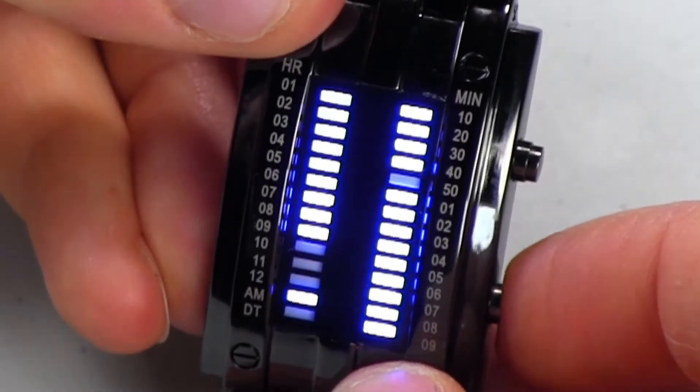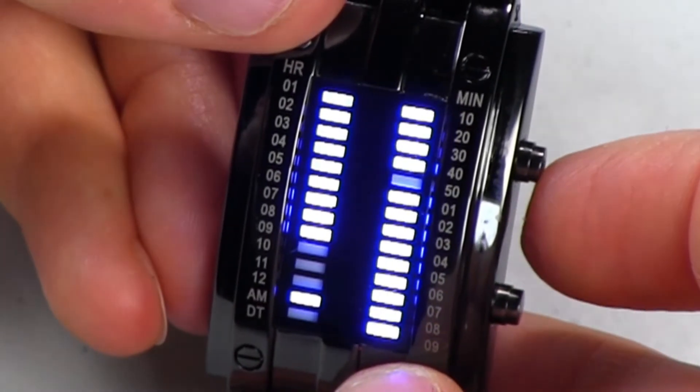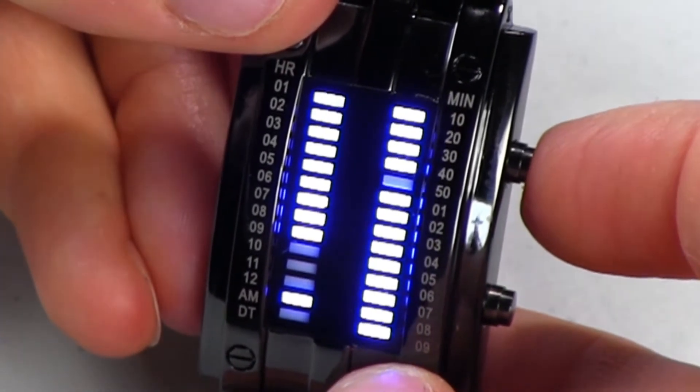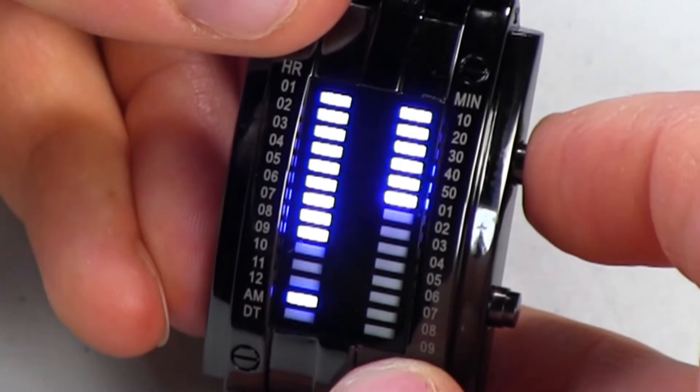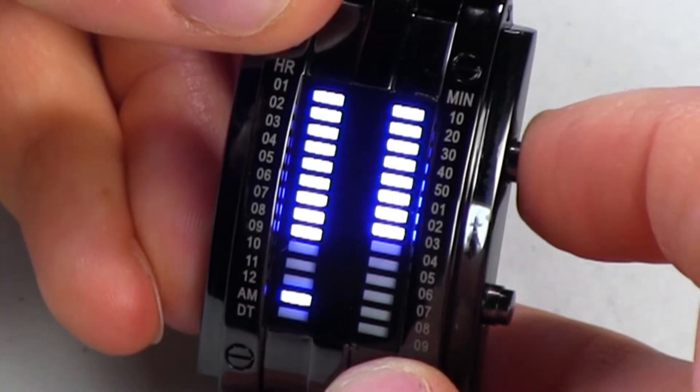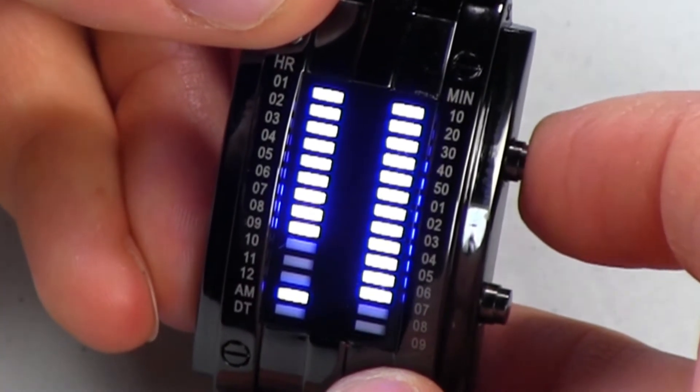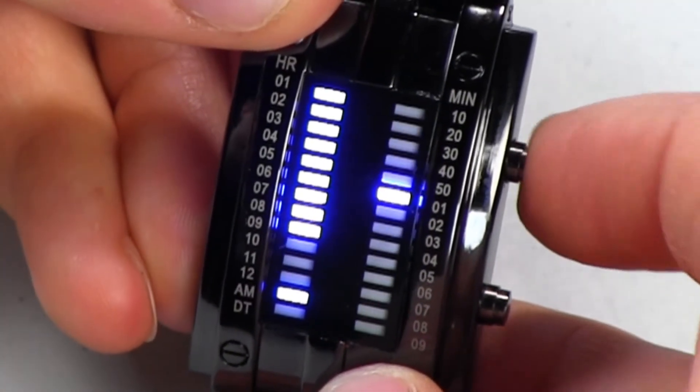So I'm going to hit the bottom button again to shift the blinking to the right side, which means now I'm adjusting the minute. So right now it's showing that it's 49. I want to set it to 9:15 AM.